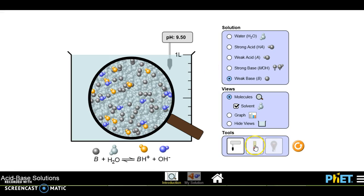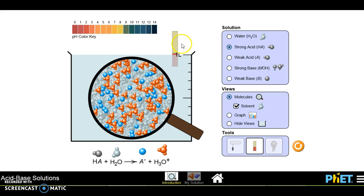You can dip this pH paper and it will change color. You can match and approximately it's going to tell you the pH. This time I'm using the strong acid.